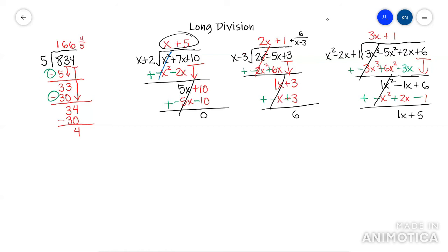So this one, the remainder is 1X plus 5 or just X plus 5 over whatever I was dividing by, which was X squared minus 2X plus 1.